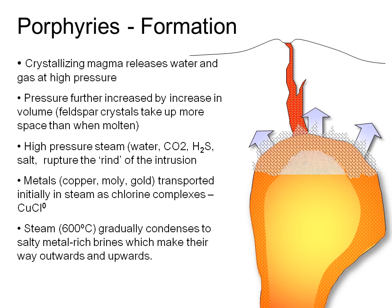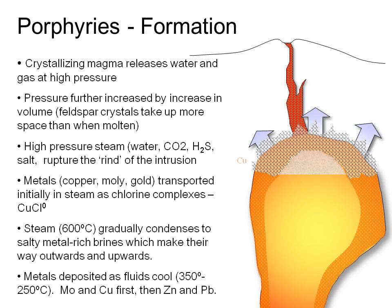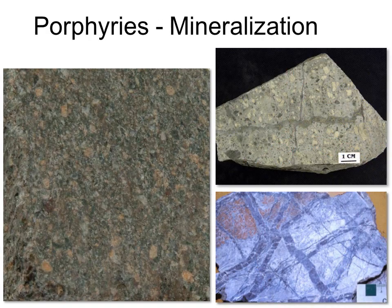The volatiles migrate to the top of the chamber and accumulate, like the foam in a glass of beer. Feldspar crystals take up more space than feldspar melt, and combined with accumulating steam and gas, pressure builds until surrounding rocks can no longer contain it. The solid rind of the magma chamber ruptures, and volatiles escape carrying metals into the fractured rock. The fluids have high salt content and transport metals as chloride complexes. As the metal-rich steam rises through cooler rocks, it condenses into brine and metals deposit below about 350°C.